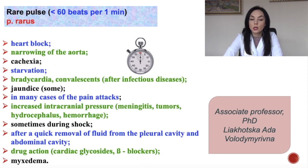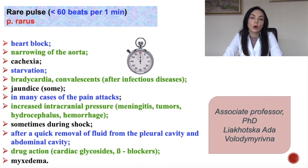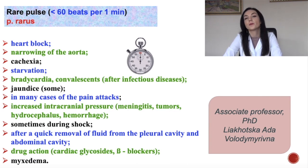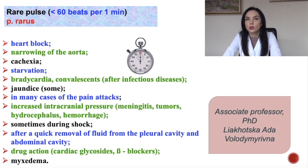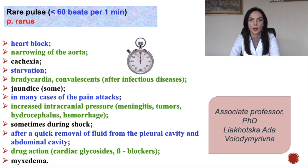Pulsus rarus, or rare pulse, we call it bradycardia — less than 60 beats per minute. It can occur during heart block, narrowing of the aorta, cachexia, starvation, jaundice, sometimes during shock, drug actions, and myxedema.